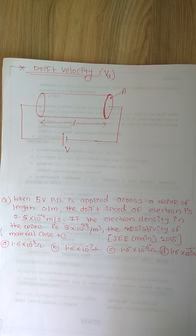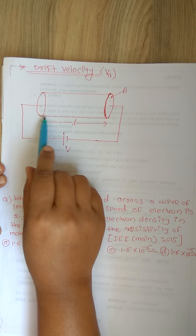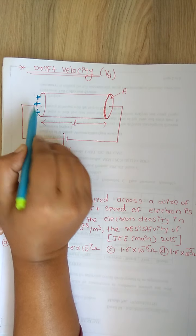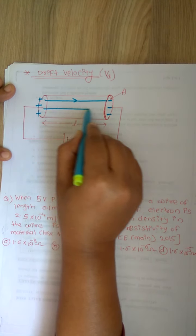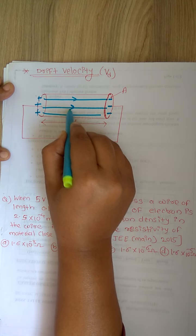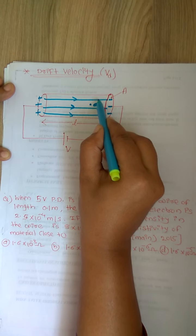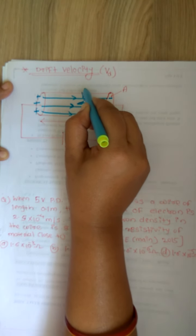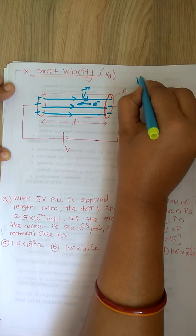Hello friends, this is your physics lecture. Here we study another important part of current electricity: drift velocity. Whenever any conductor is connected to an external battery, positive charges are collected at one side and negative charges at another side. Due to the electric field generated inside the conductor, electrons are drifted in the opposite direction of the electric field with a particular velocity called drift velocity.